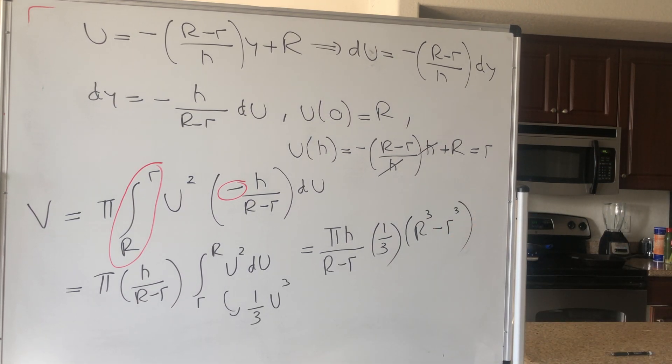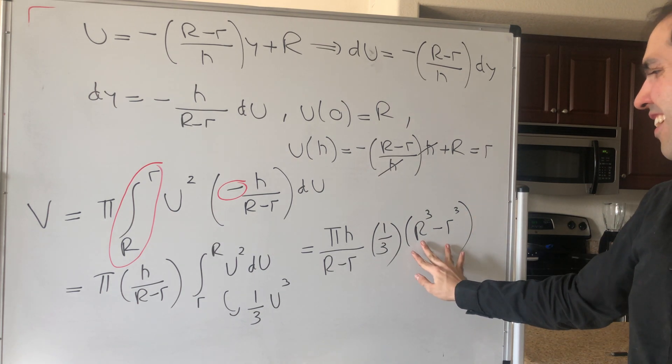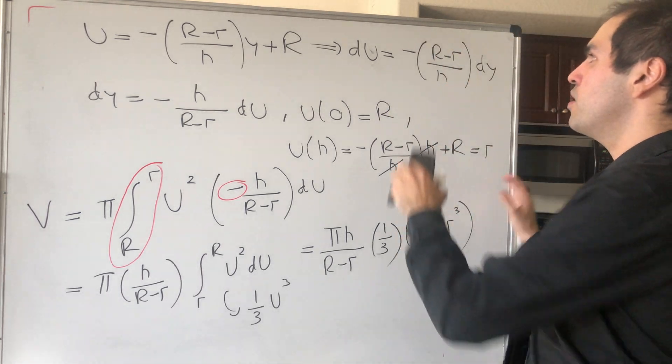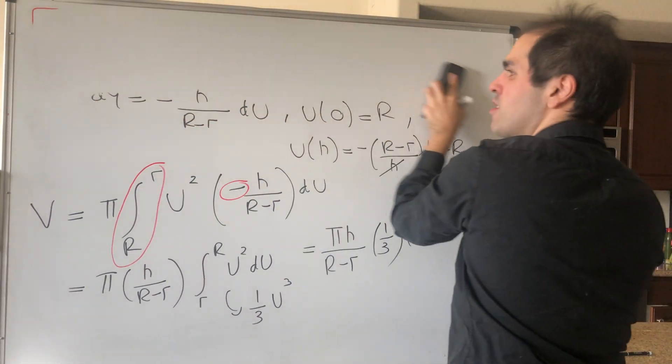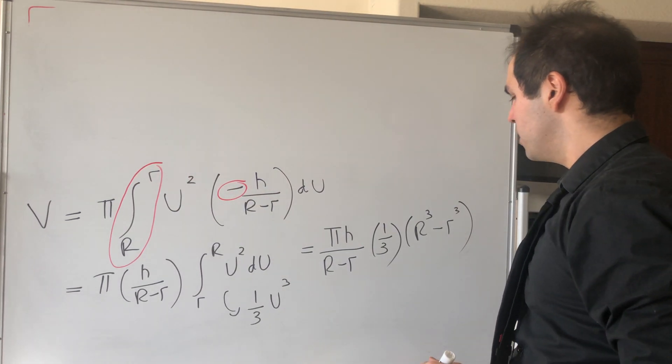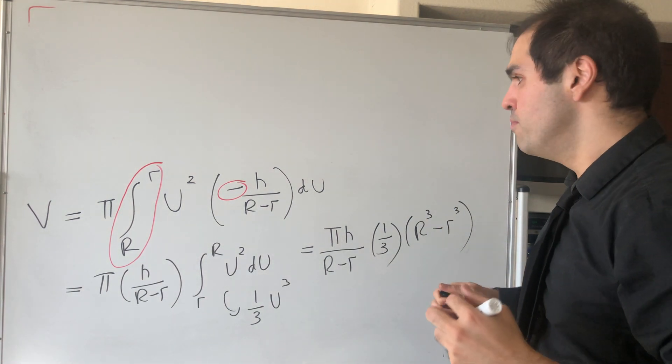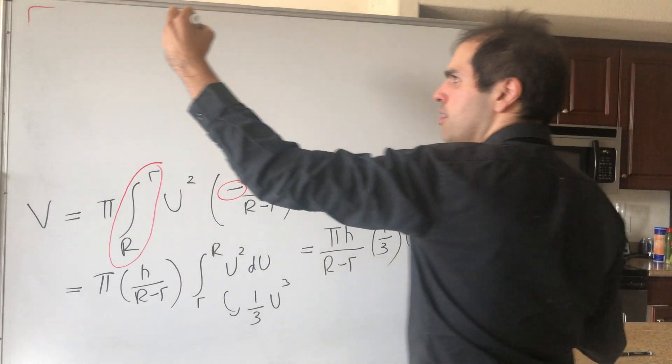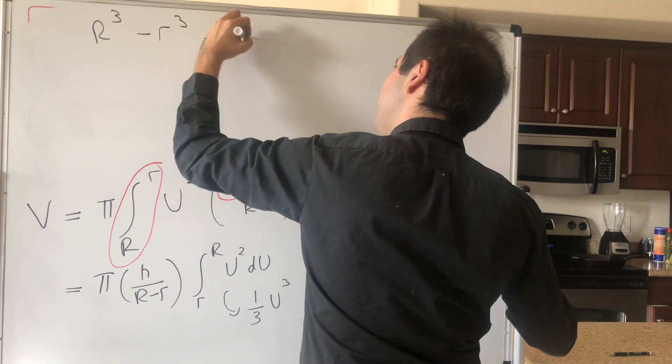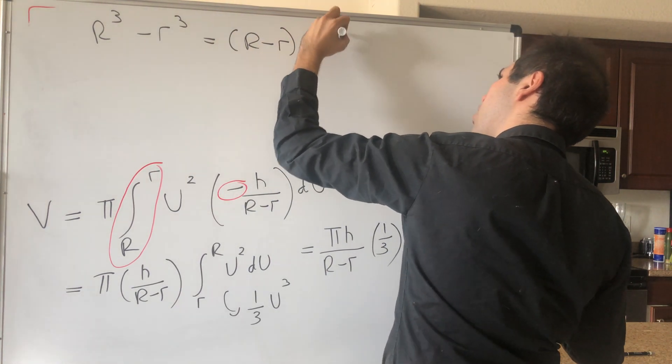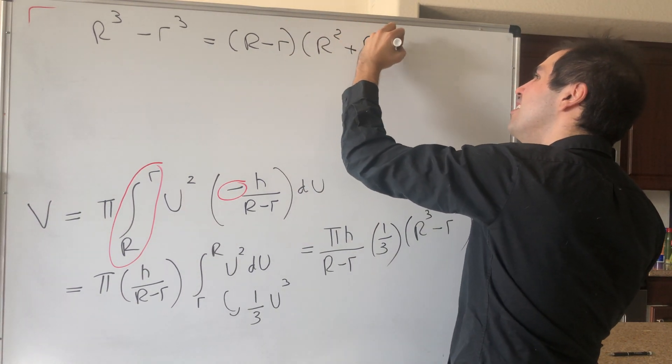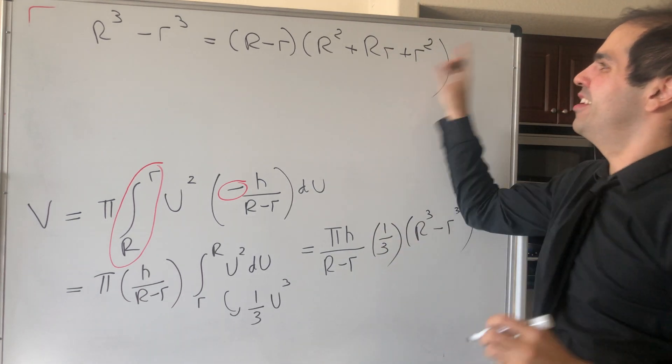So we have that, but then notice, maybe you know this, maybe not, there is a beautiful formula for the difference of cubes. Because notice, we know the formula a squared minus b squared, that is (a minus b) times (a plus b), but in general, this also holds similarly for cubes, because R cubed minus r cubed, that's the same thing as (R minus r) times (R squared plus rR plus r squared).